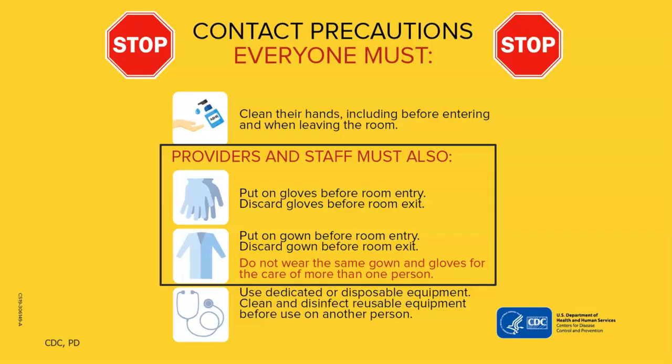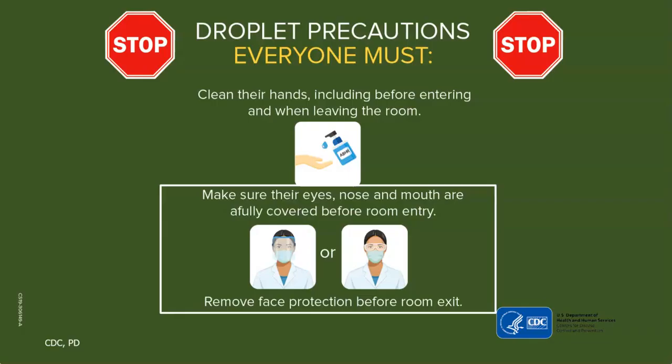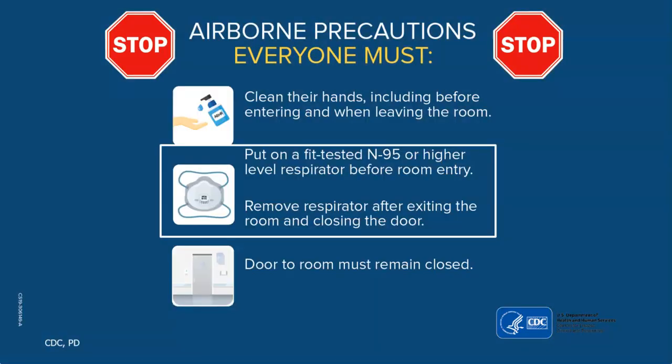To summarize precaution-specific PPE removal: with contact precautions, use gloves and gown and take them off before you leave the room. With droplet precautions, your eyes, nose, and mouth are covered, and you take PPE off before leaving the room. With airborne precautions, the difference is that you exit the room first, shut the door, and then it's safe to remove the N95 respirator.